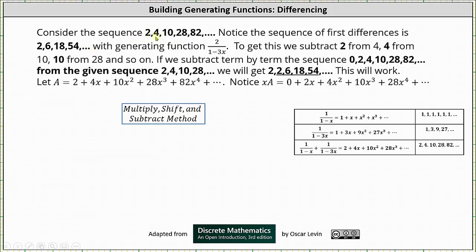Notice we subtract two from four to get two, we subtract four from ten to get six, we subtract ten from 28 to get 18, and so on. From here, notice the generating function for two, six, 18, 54, and so on is equal to two times the generating function for the sequence one, three, nine, 27, and so on, which gives us two divided by the quantity one minus three x for the generating function for the sequence of first differences.